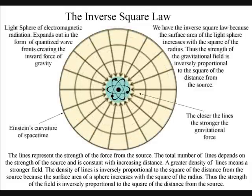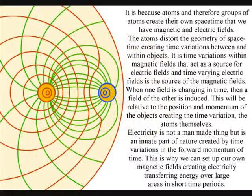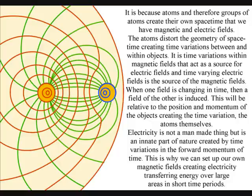When the atoms come together under their own gravity, time will synchronise, distorting the geometry of space-time, creating time variations between and within objects.